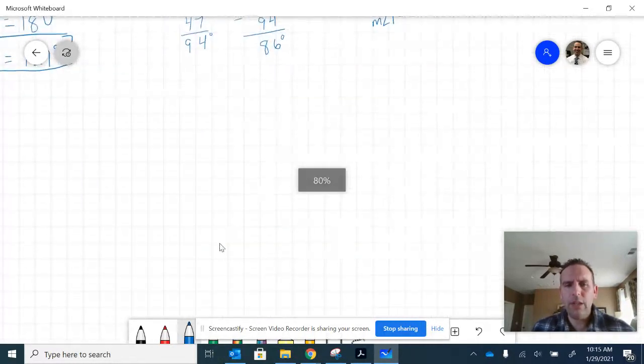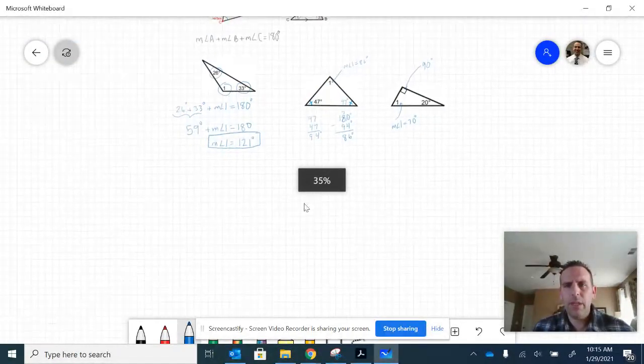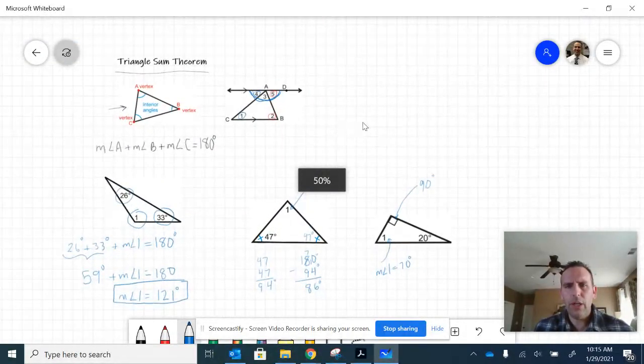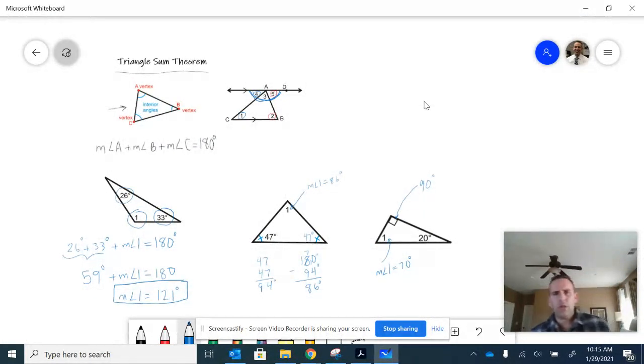Let's take a look at this as an overall view. Overall, we can use this triangle sum theorem to think about the missing angle on any triangle, even when the diagram gets more or less complex.